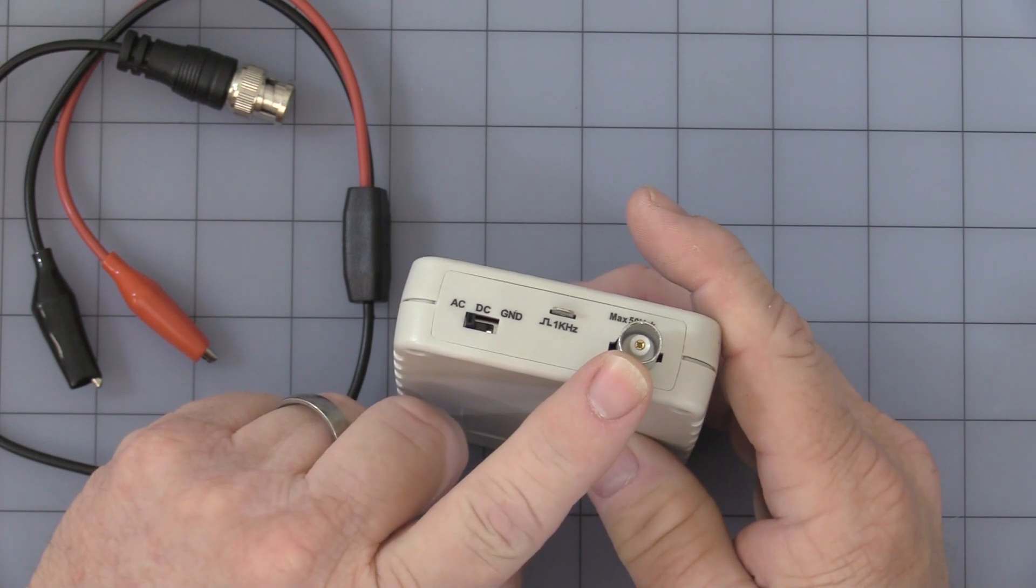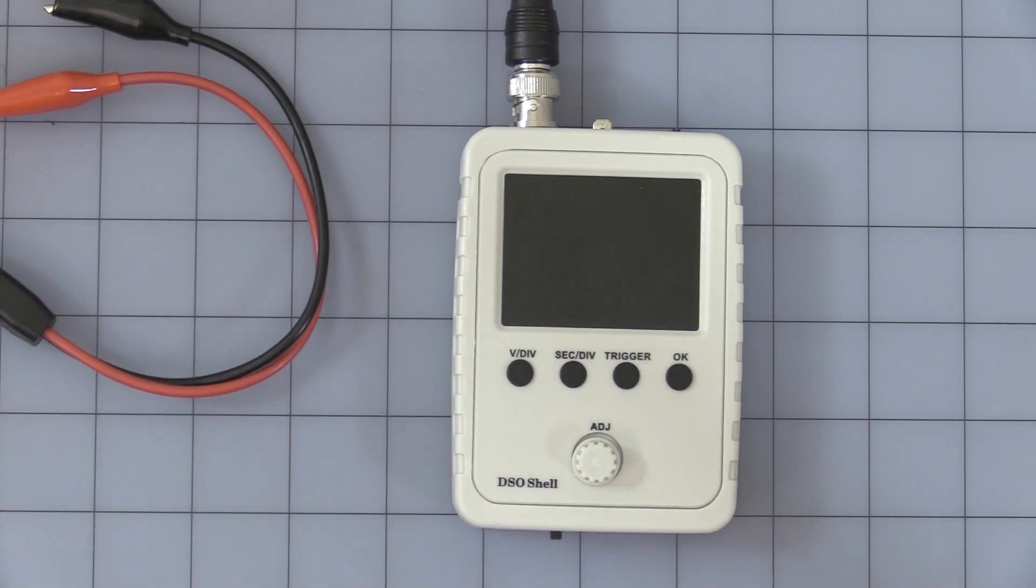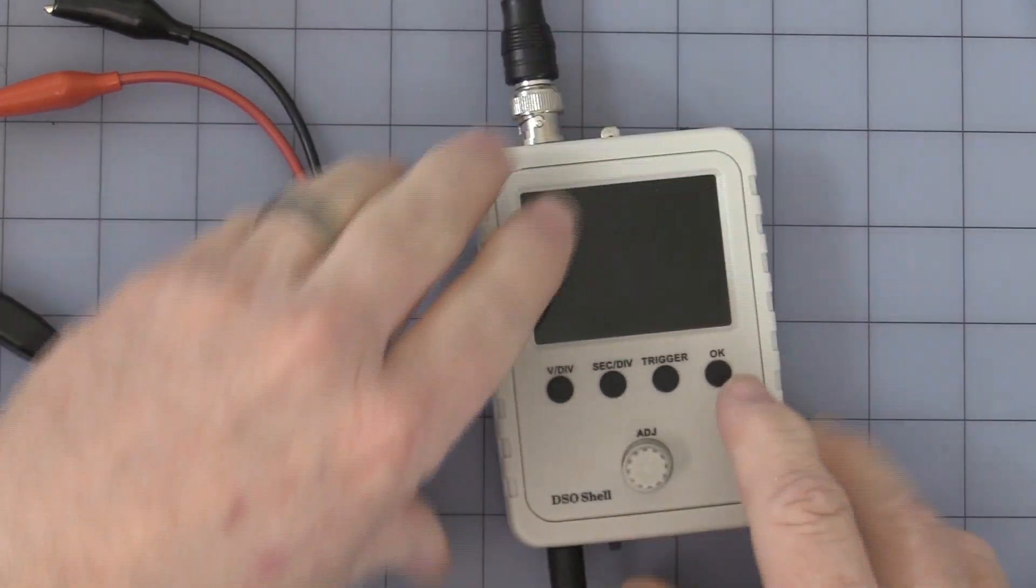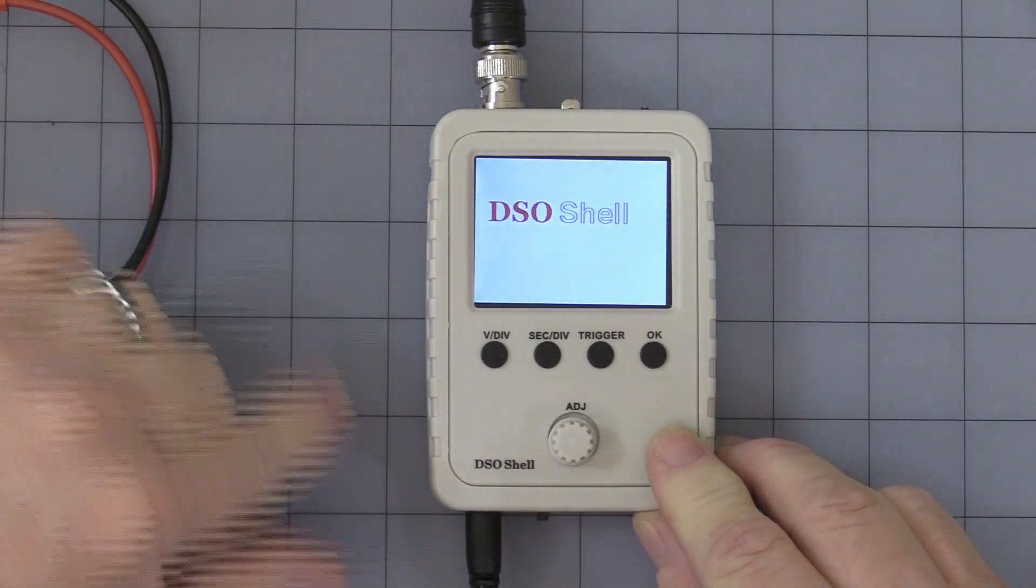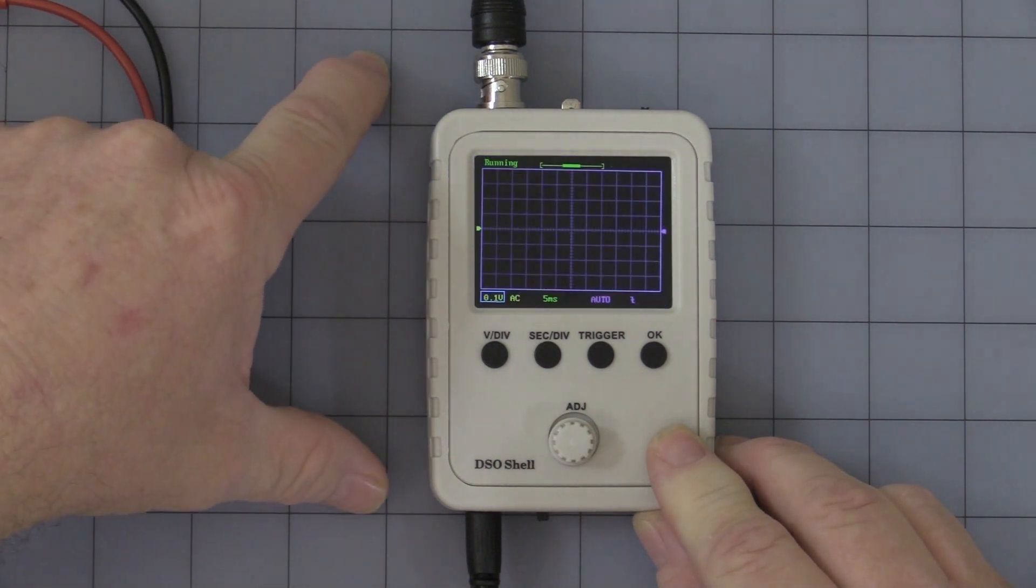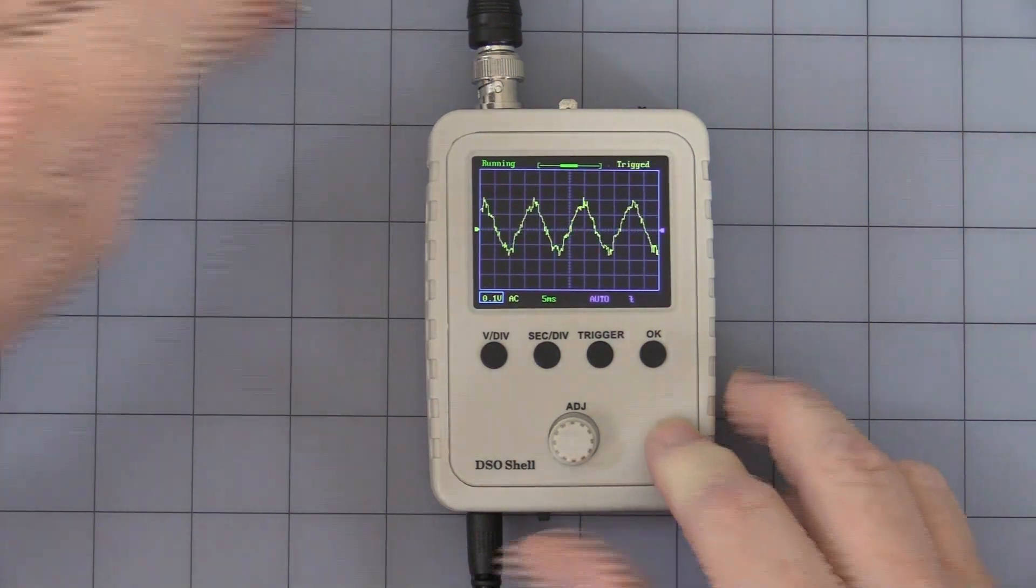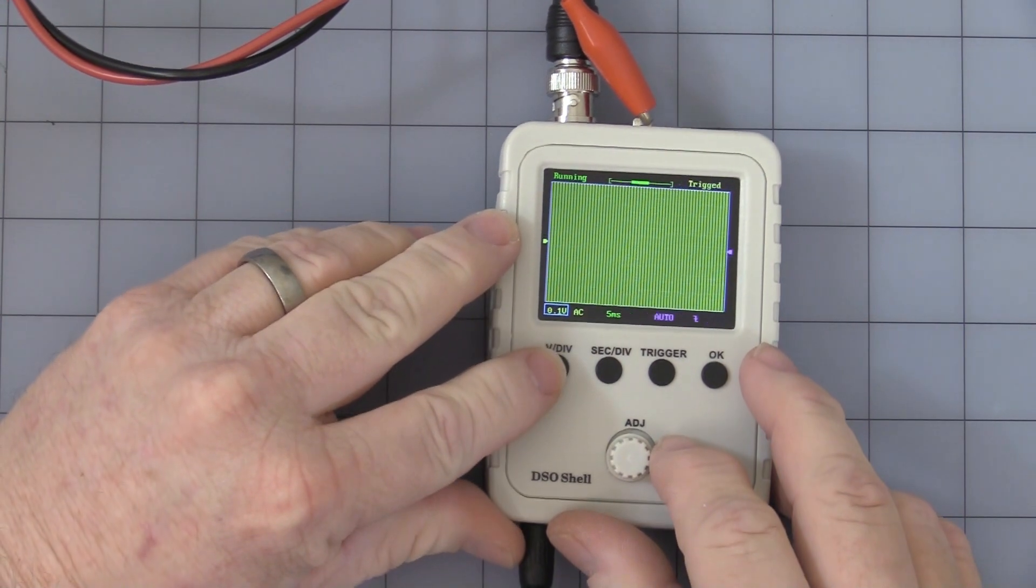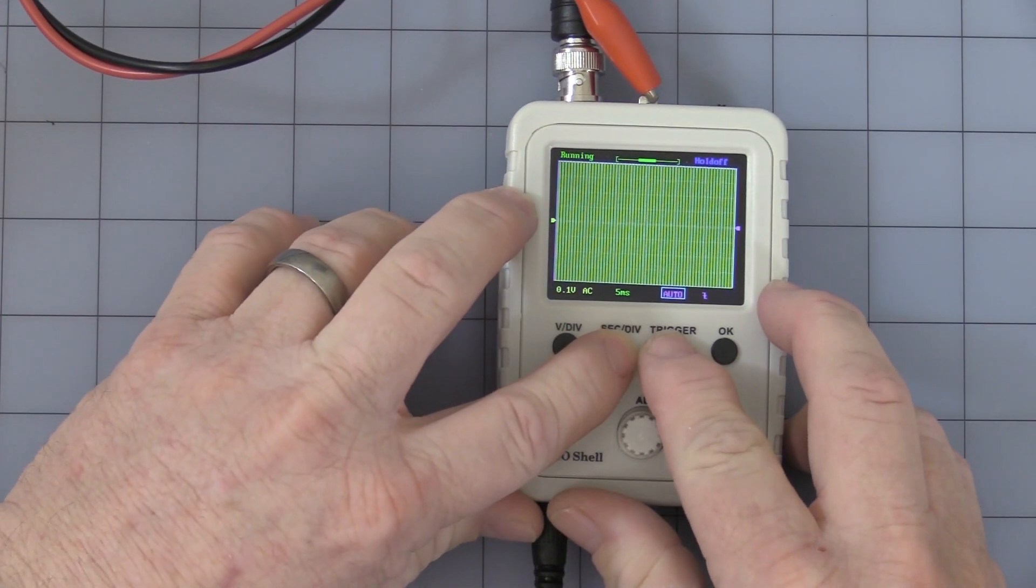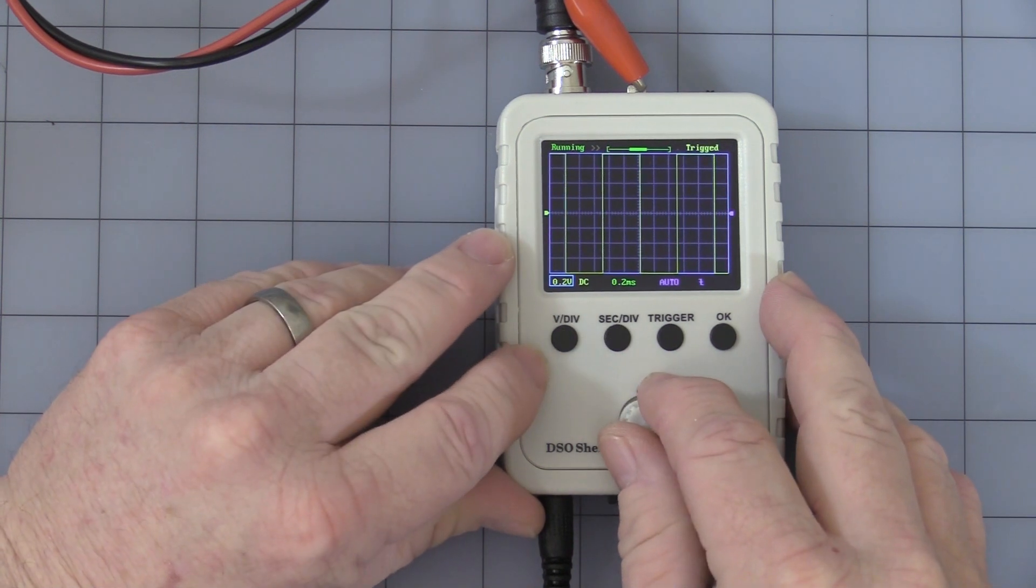It has a nice little one kilohertz square wave generator right there at the tip and your BNC input. Plug in the power. As you can see, it's a nice small handheld unit. These are one inch squares, so it's about four inches, four and a half inches including the little BNC connector.